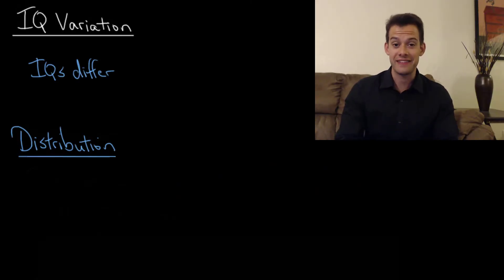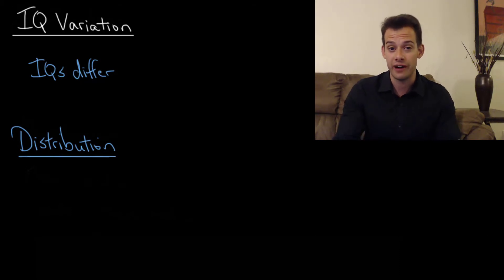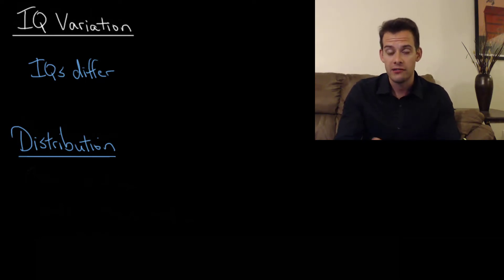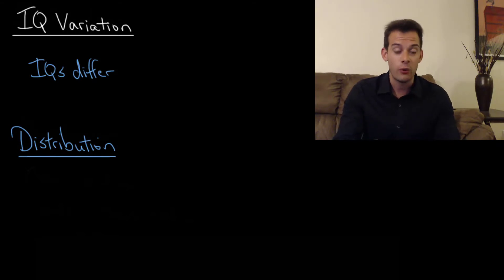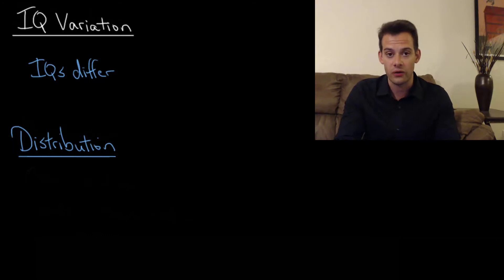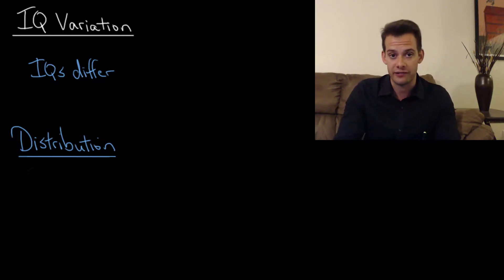Hi, I'm Michael Corayer and this is Psych Exam Review. In this video I'm going to talk about IQ variation. IQs vary — people get different IQ scores, and in terms of assessment this is a good thing. If we had an IQ test where everyone got the same score it wouldn't be telling us anything about those people. We want to see that they have different abilities and skills, so a good IQ assessment will give us a broad range of different scores.